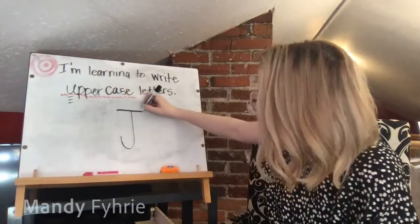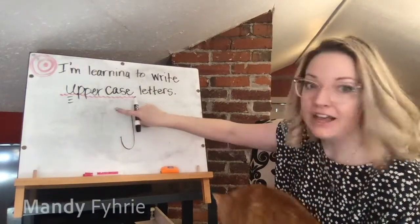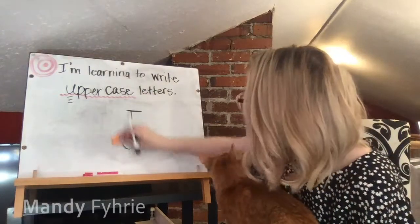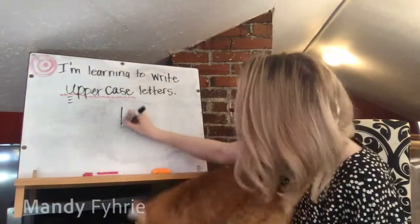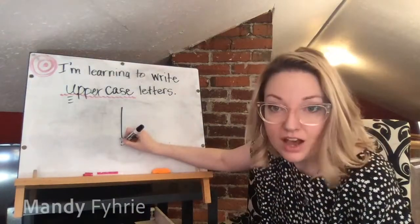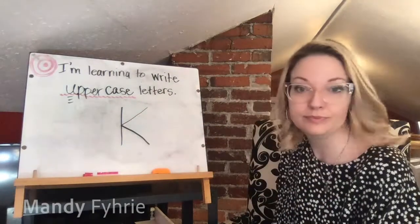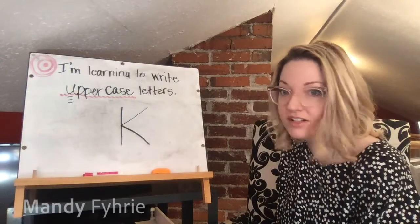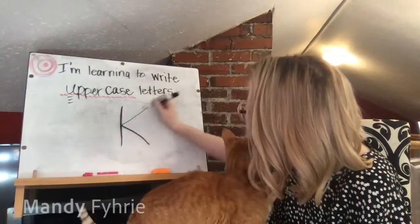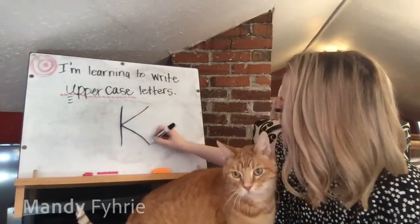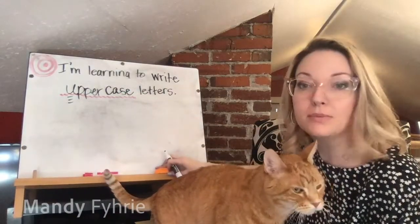Capital J: big line down, fish hook at the bottom, then the top line goes left and moves forward. Capital K is just like a lowercase k but starts at the top: big line down, hop to the top, little line in, and kick out. That's a tricky one that takes lots of practice.